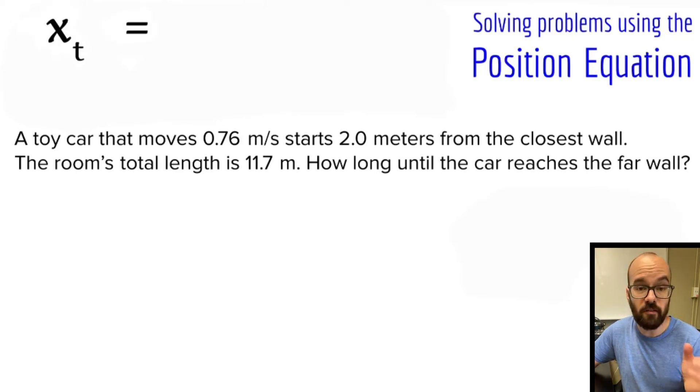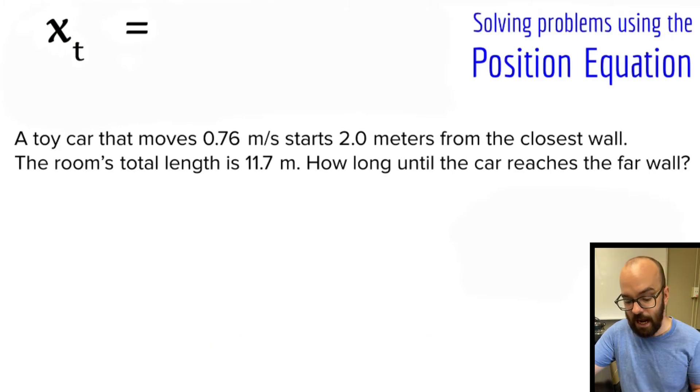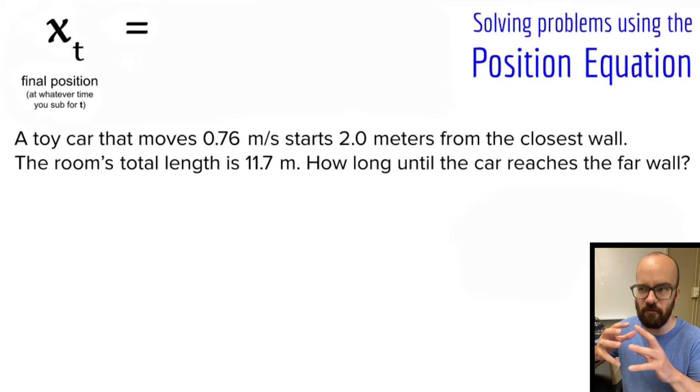Position, we're going to use the variable x for position, which comes from the fact that this is a horizontal position that we're looking at. Now if you notice here, I wrote subscript t, and the t just means that this is the position at whatever time we substitute in for the variable t in the equation. A lot of times I'll refer to this as final position, and you might also see this written as x sub f to represent final position. But it really doesn't have to be the final position - it could be the position at any time that we substitute in.